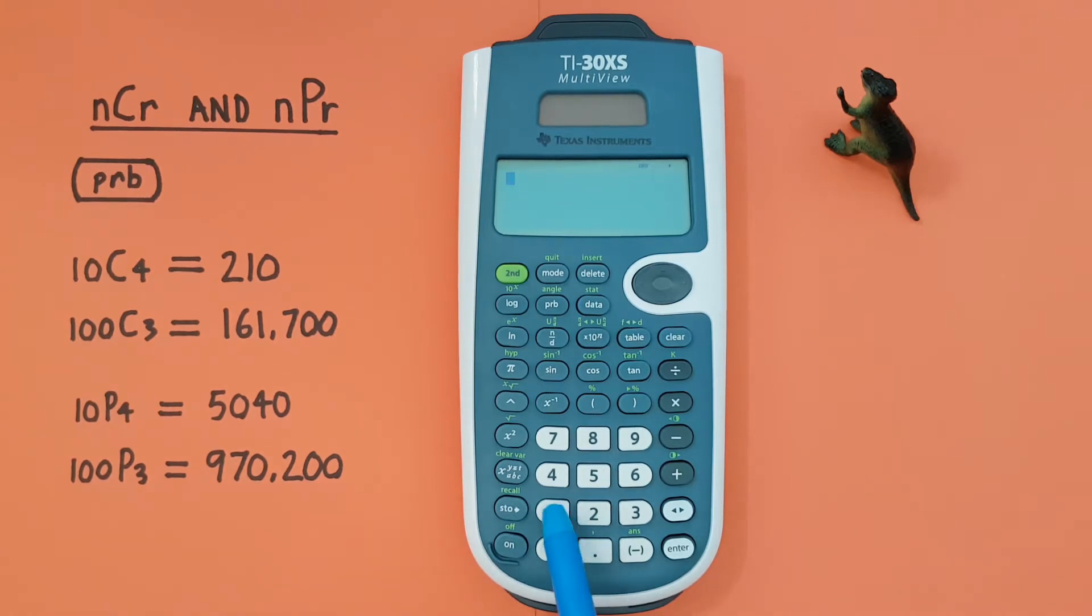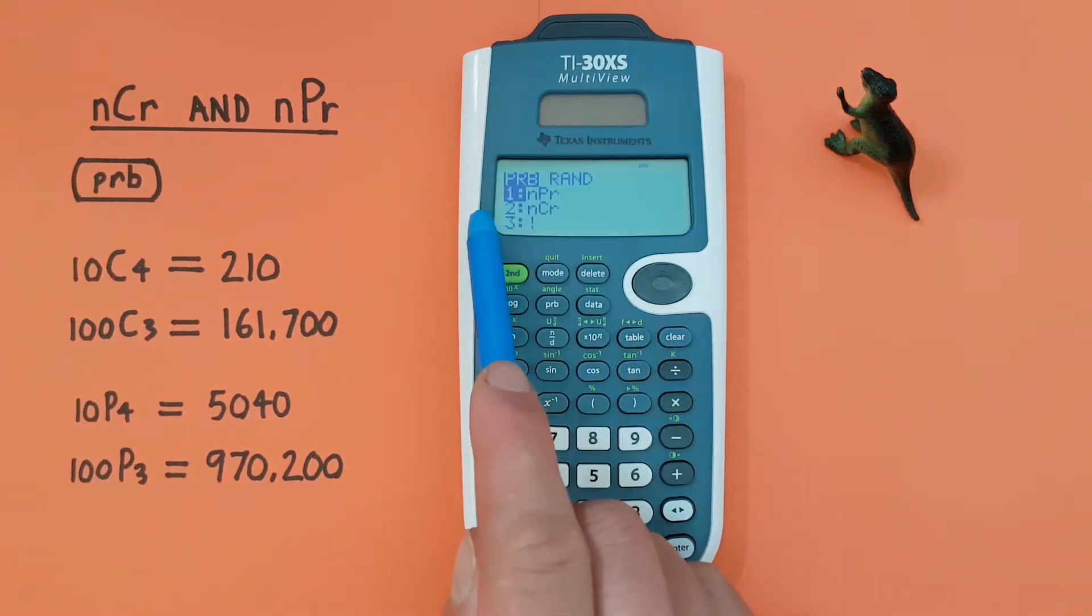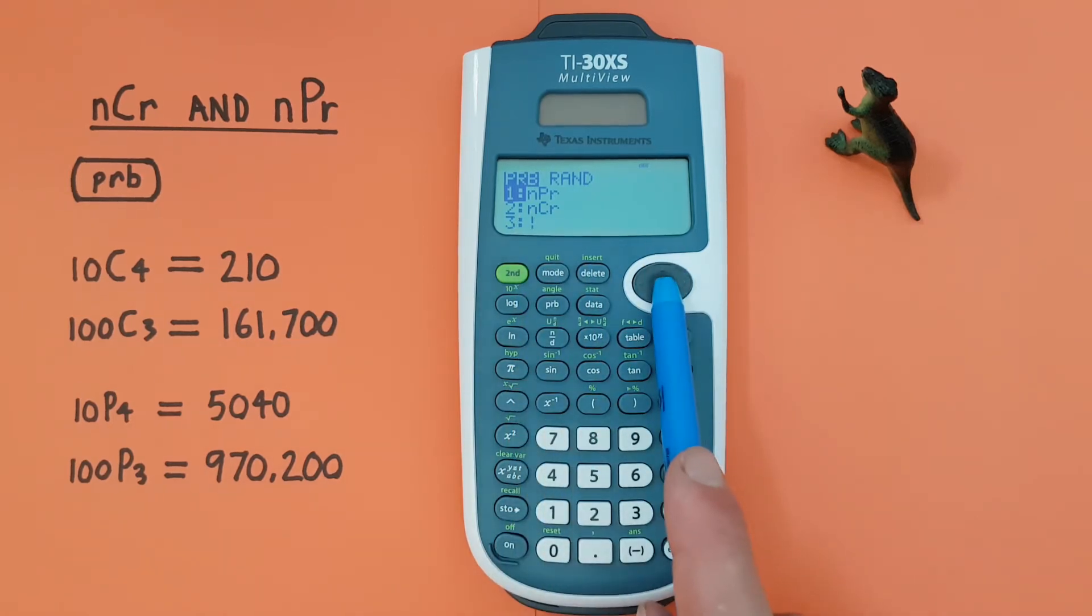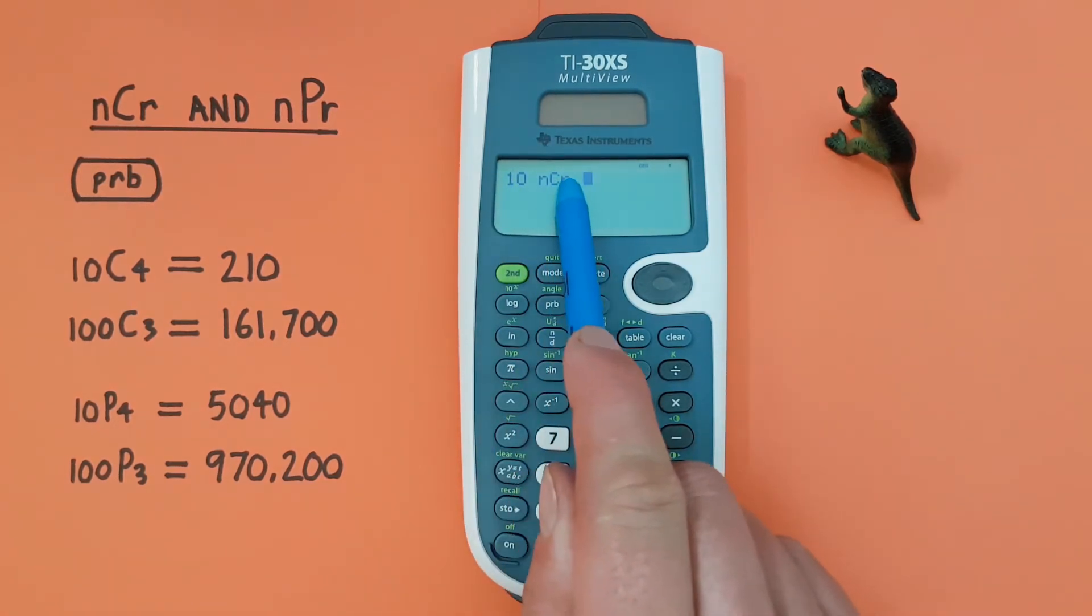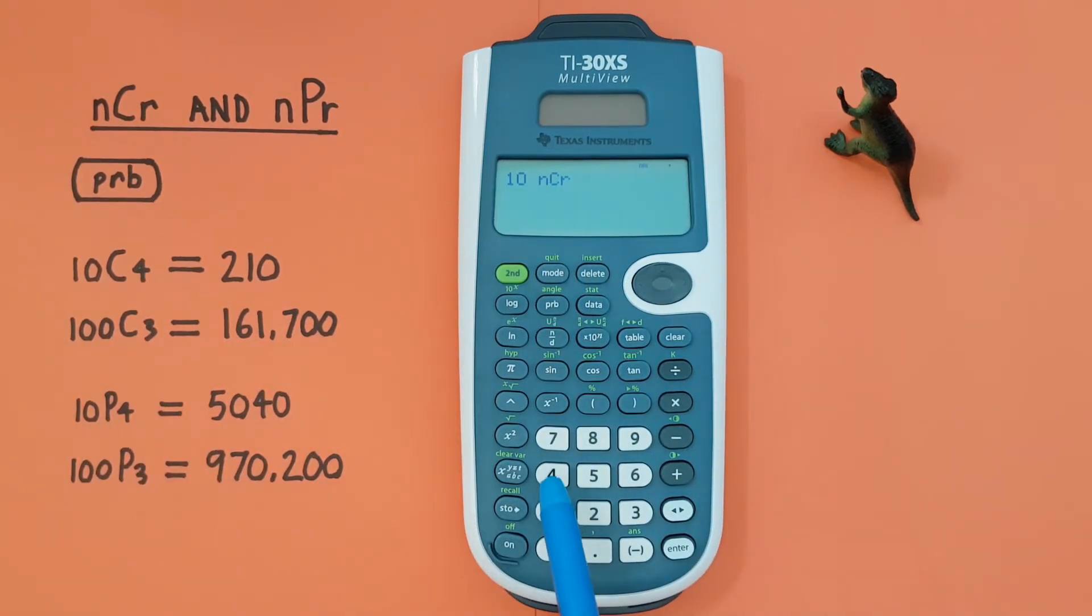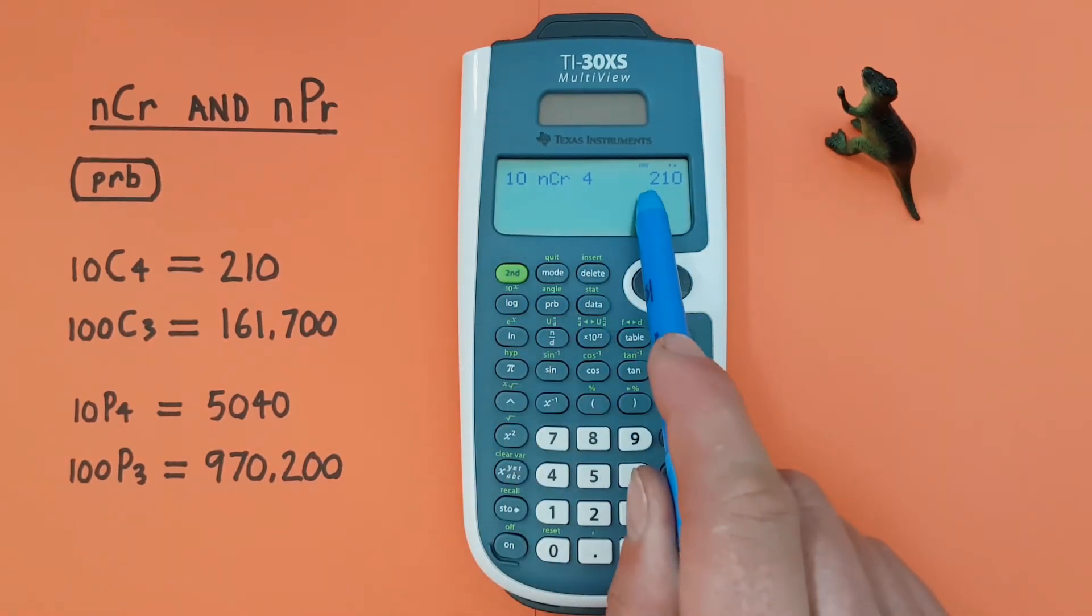To do that, we would enter the 10 on our screen first and then hit the PRB key, which brings us to this menu here. We see the nCr, or combination, is the second option there, so we scroll down or just press 2, select that. Now we see 10 nCr is on our screen and then we enter our 4 and enter. And we see 10 choose 4 is equal to 210.